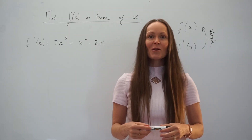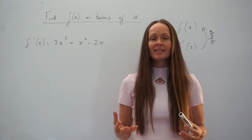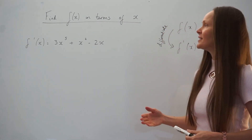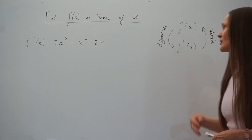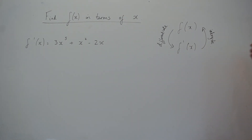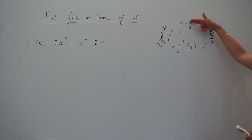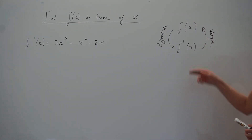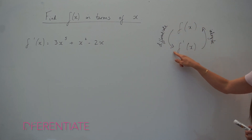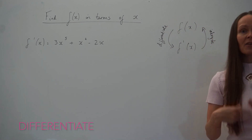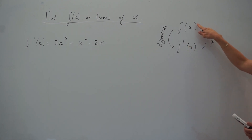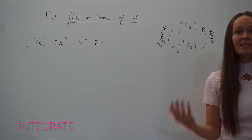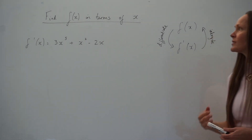Hey guys, in this video I'm going to show you how to find f of x in terms of x when presented with f dash of x. So just going back to differentiation — hopefully you will know that when you're given a function f of x, if you need to find f dash of x you have to differentiate. So if you want to do it the other way around, going from f dash of x back to f of x, you have to integrate, as integration is the reverse process of differentiation.